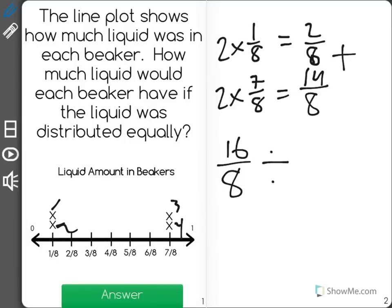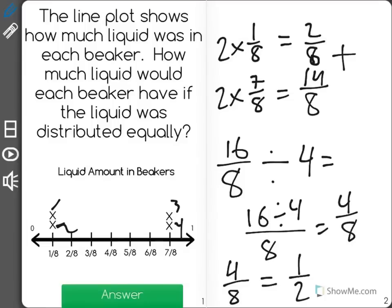So we're going to split this 16 eighths up into 4 beakers. The way we do this is 16 divided by 4 over 8, or 4 eighths of a cup. Now when you simplify 4 eighths, you find out that it is 1 half of a cup.